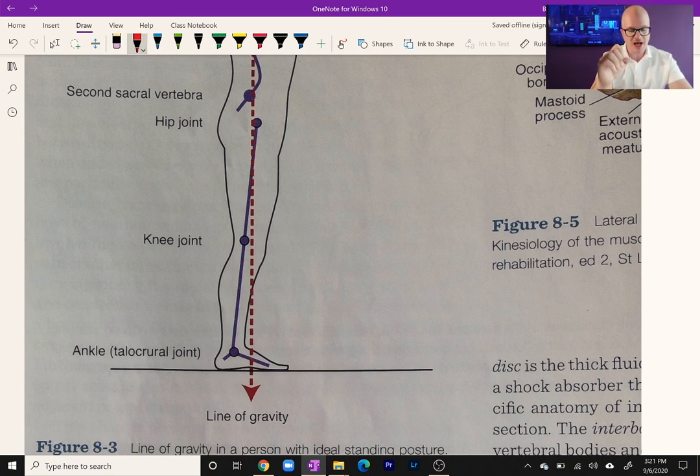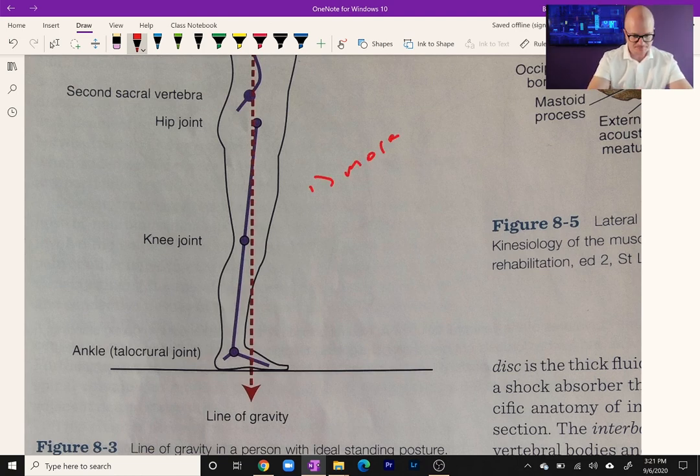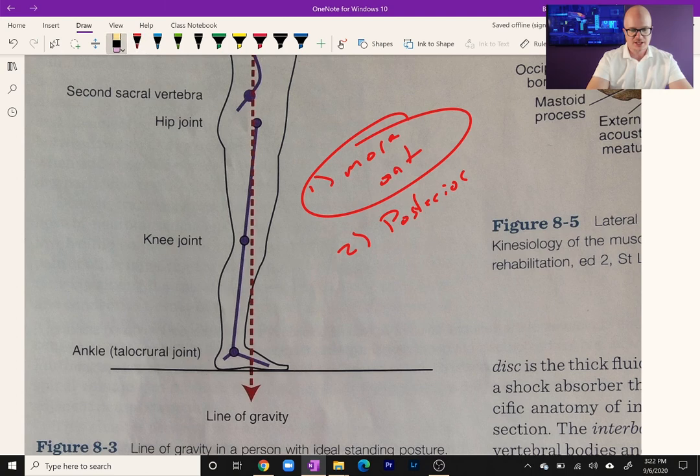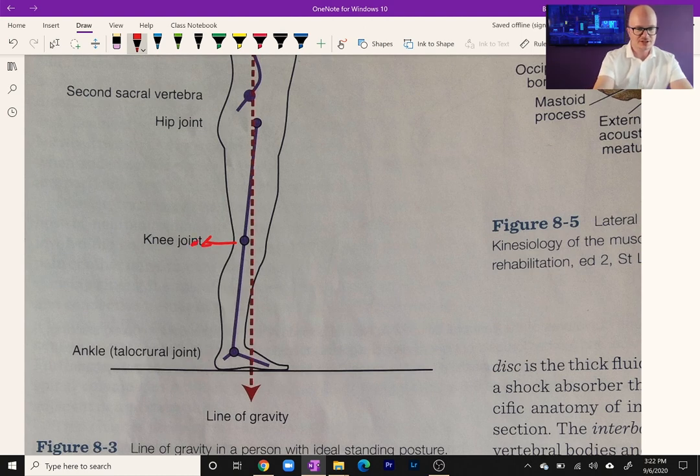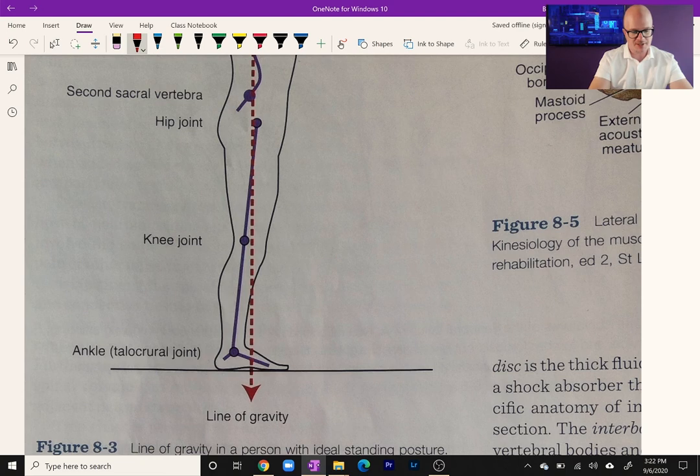If someone has genu recurvatum, hyperextension of the knee, where is the plumb line going to be in relationship to the knee? Is it going to be more anterior or posterior? The answer is if someone has genu recurvatum, number one, more anterior, because if their knee is hyperextended this line is going to move forward. Then when patients are weak, their knees start to flex, so the plumb line becomes posterior to the knee sometimes.